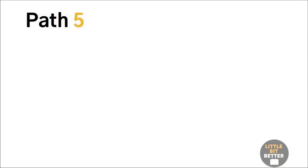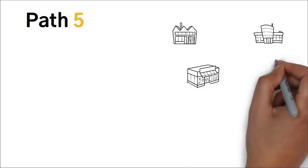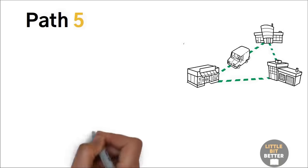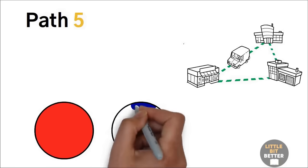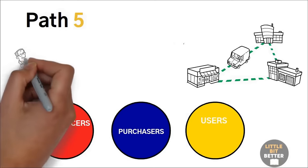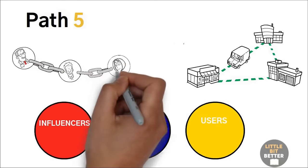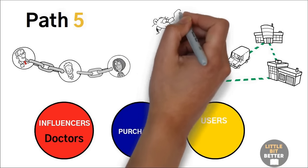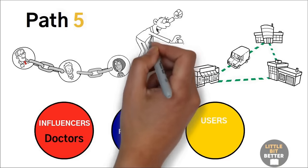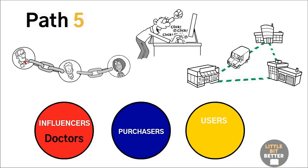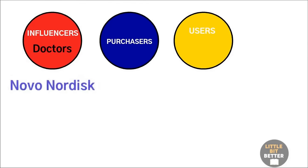Path number five, look across the chain of buyers. Creating a blue ocean can also be achieved by looking across the chain of buyers in the industry. There are often multiple groups involved in the buying decision, including purchasers, users, and influencers. For example, the pharmaceutical industry primarily targets influencers such as doctors, while the clothing industry targets users. By gaining new insights into how to redesign the product to appeal to different buyers, companies can create a blue ocean market.